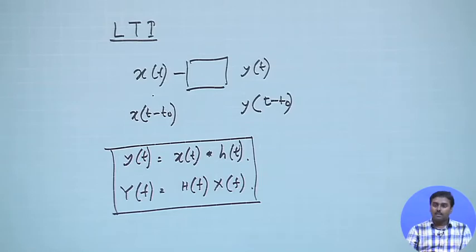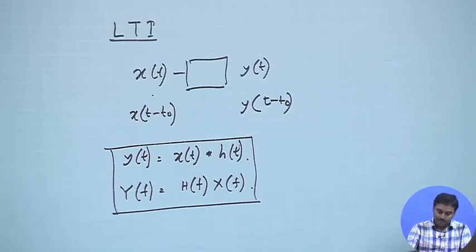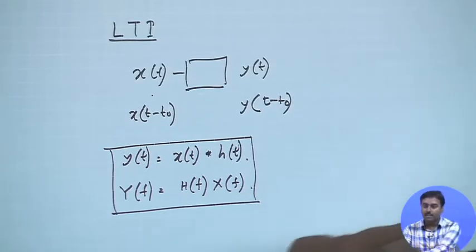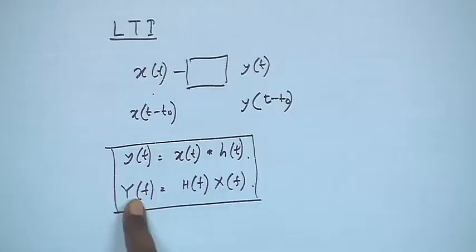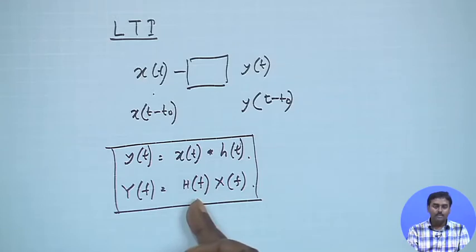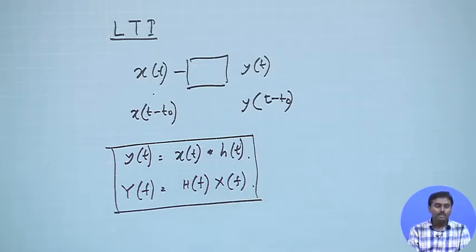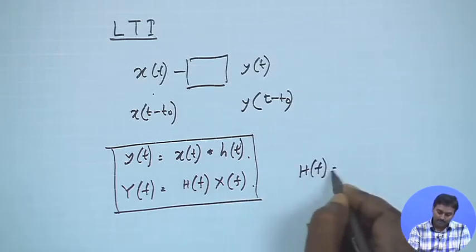We then went to a special class of linear time invariant systems, where we were talking about a distortion-less system. For a distortion-less system, the amplitude should remain the same. That means H(f) should give the same characteristics, so Y(f) should have the same characteristics as X(f). Therefore, H(f) must be 1, or more precisely, mod H(f) must be 1 for all frequencies.